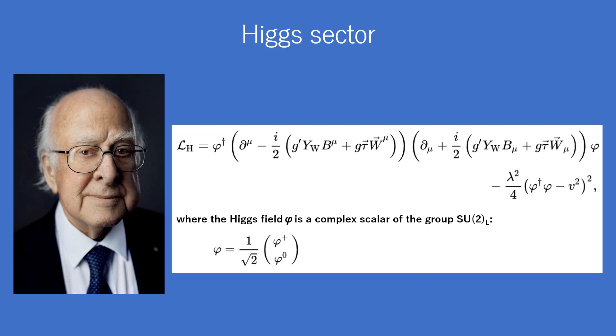In the Standard Model, the Higgs field is a complex scalar of the group SU(2)_L, where the superscripts + and 0 indicate the electric charge of the components. The weak hypercharge of both components is one.